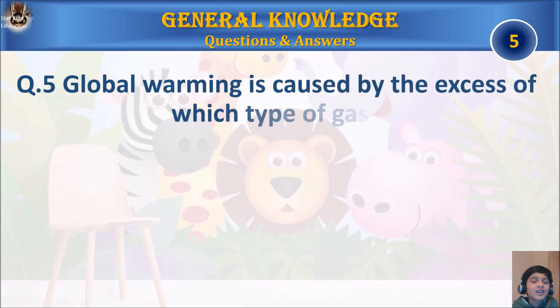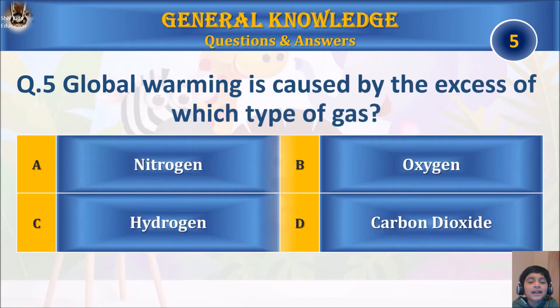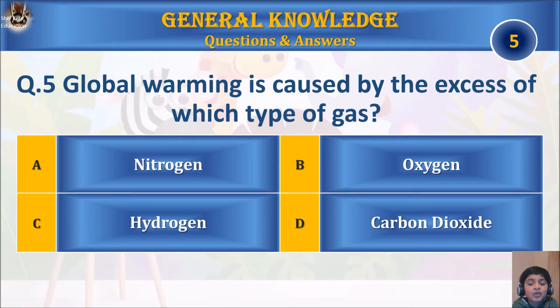Question 5: Global warming is caused by the excess of which type of gas? A) nitrogen, B) oxygen, C) hydrogen, or D) carbon dioxide? Your time starts.